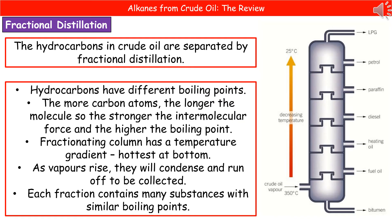As those different fractions start moving up the column, they eventually reach a point where they're going to condense. At that point, they run off and are collected as that individual fraction. Each fraction may contain substances that have similar boiling points, so it's not just a single chemical that comes out — it's a mixture of chemicals that all have approximately the same boiling point.